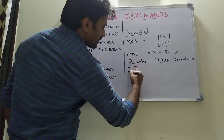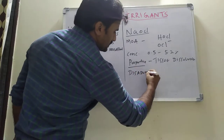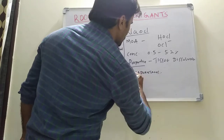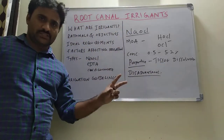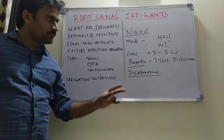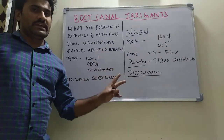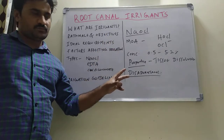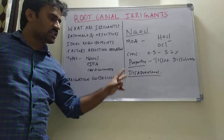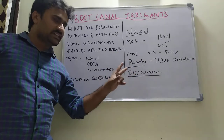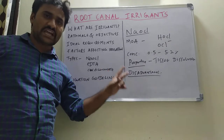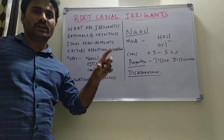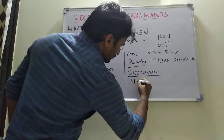The disadvantages of sodium hypochlorite include: it has an unpleasant taste and smell; it does not remove the smear layer — that is the most important disadvantage. The main advantage is tissue dissolving capacity; the main disadvantage is unpleasant taste and failure to remove the smear layer. Another issue is the sodium hypochlorite accident — the unwanted extrusion of sodium hypochlorite from the root apex into the normal periradicular tissues.